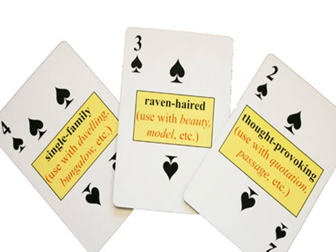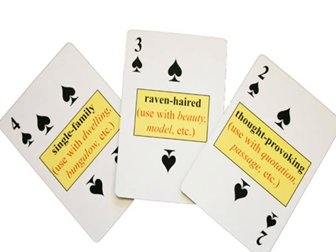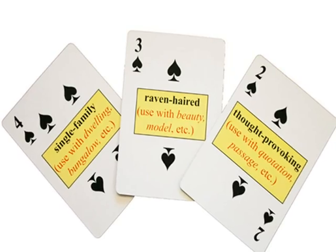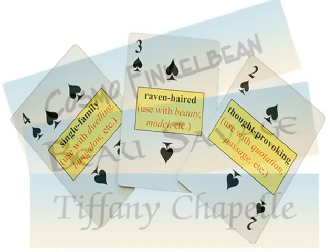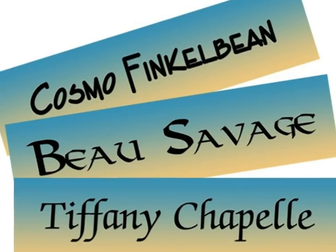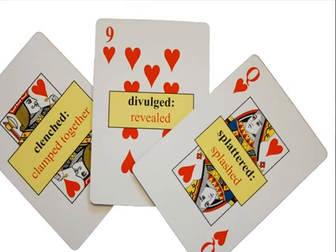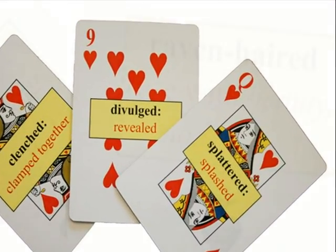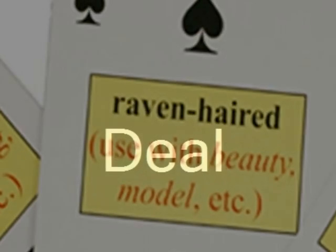As an extension to this lesson, after you have repeated this free-write activity two or three times, you could create three decks of cards — one with character names, one with verbs, and one with colors. The class can then play Deal, Discard, Draft.